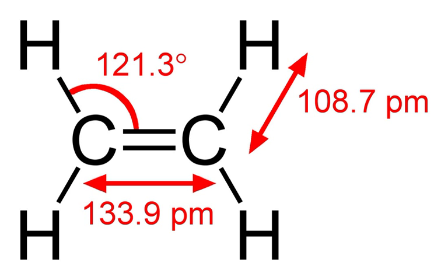Sarah Dout discovered that ethylene stimulated abscission in 1917. Farmers in Florida would commonly get their crops to ripen in sheds by lighting kerosene lamps, which was originally thought to induce ripening from the heat. In 1924, Frank E. Denny discovered that it was the molecule ethylene emitted by the kerosene lamps that induced the ripening. It was not until 1934 that Gane reported that plants synthesize ethylene. In 1935, Crocker proposed that ethylene was the plant hormone responsible for fruit ripening as well as senescence of vegetative tissues.